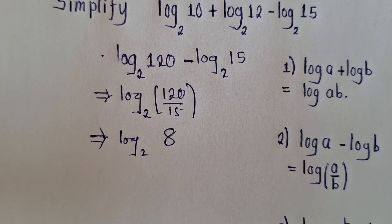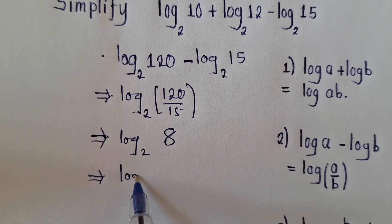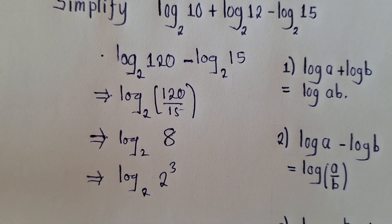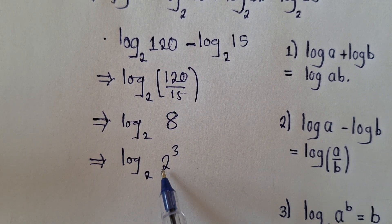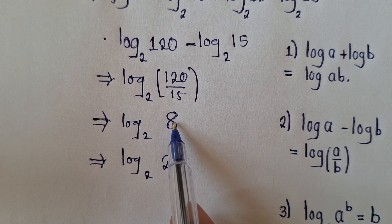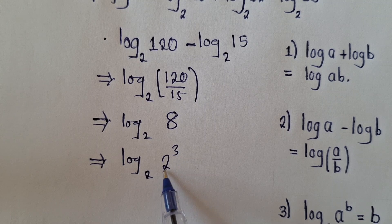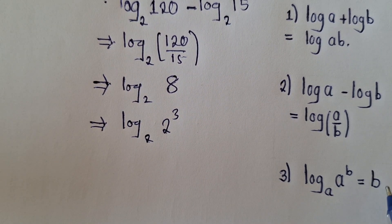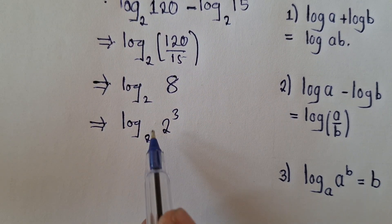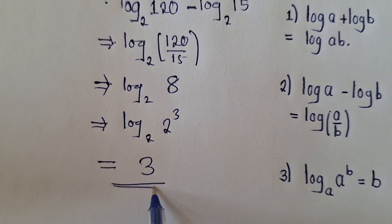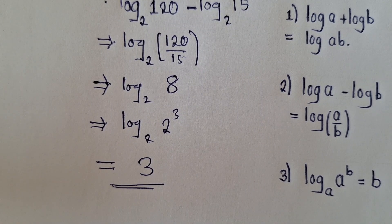From this point we get log base 2 of 8, because 120 divided by 15 gives us 8. Now applying property 3 — since 2 to the power of 3 equals 8, and the base matches, the whole expression simply equals 3.